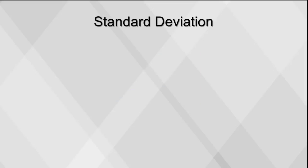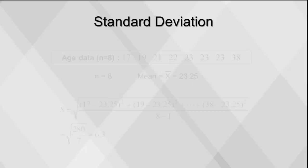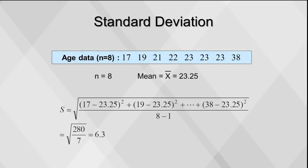Standard deviation is the most commonly used measure of variation. It shows the variation around the mean and has the same units as the original data. It is calculated by finding the square root of the variance. Here's an example of the standard deviation using age data.